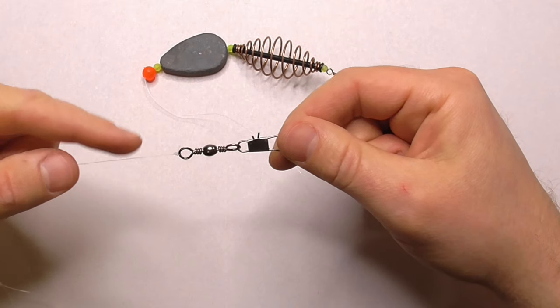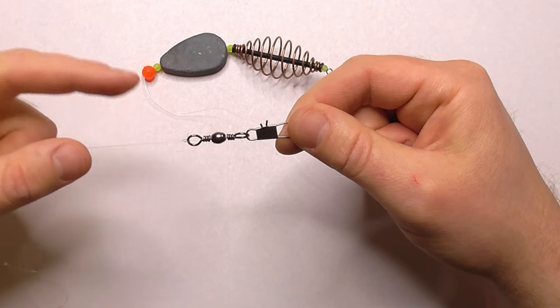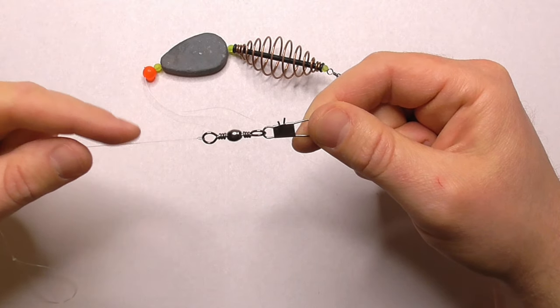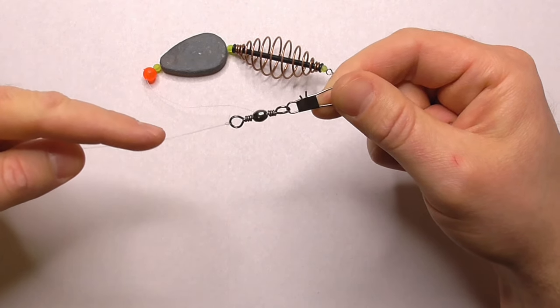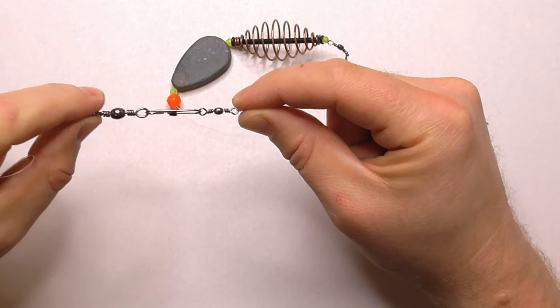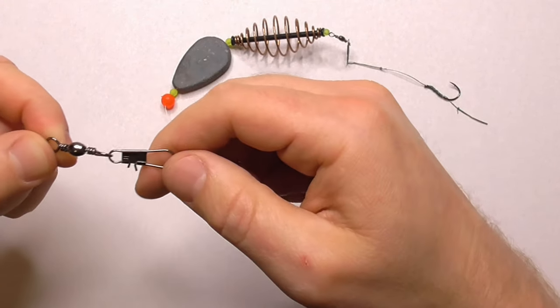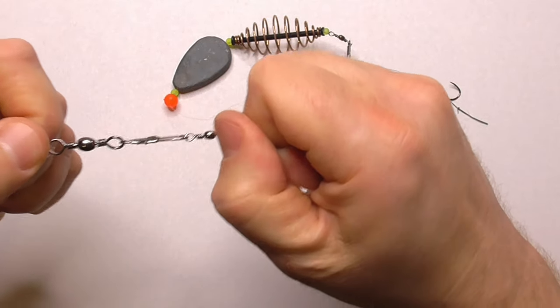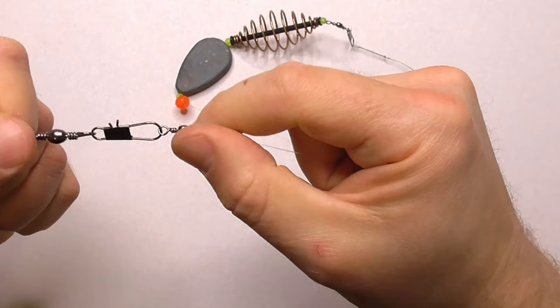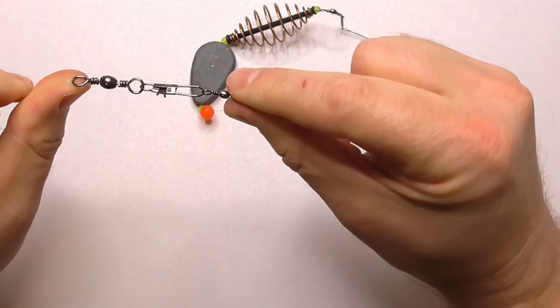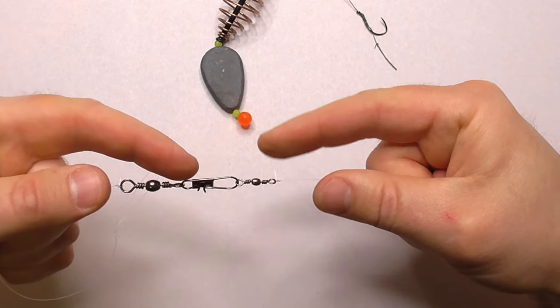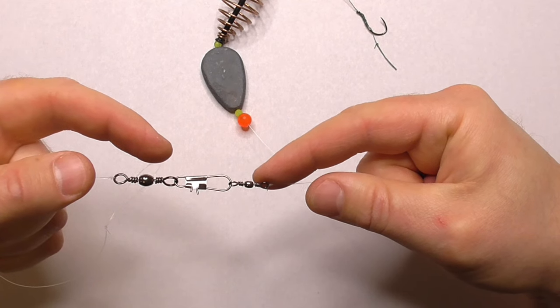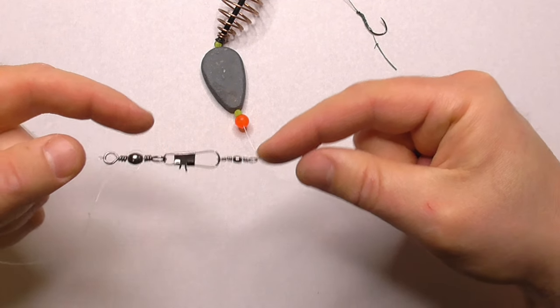But we'll start up at the top here. This is the main line and Art uses a 15 pound green Suffix braid for the main line. And then the snap swivel attached to the main line here, and that's a locking snap swivel so it'll never, you can pull on it as hard as you want, your line will break before that snap swivel will let loose.